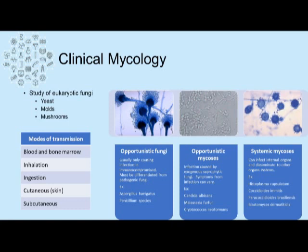Mycology can be broken down into three major categories. There are opportunistic fungi, which usually only cause infection when a host is compromised, such as immunocompromised individuals. Examples include Aspergillus fumigatus or Penicillium. We also have opportunistic mycosis, which is infection caused by exogenous saprophytic fungi, and symptoms can vary. Examples include Candida albicans, Malassezia furfur, and Cryptococcus neoformans.